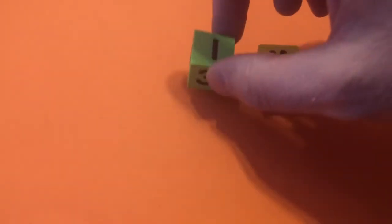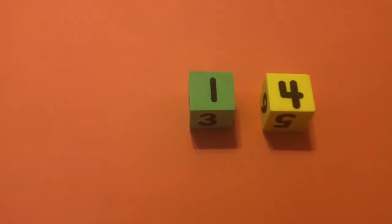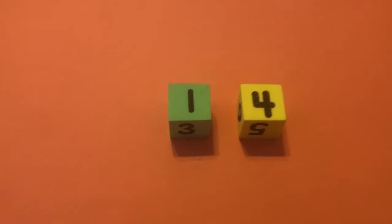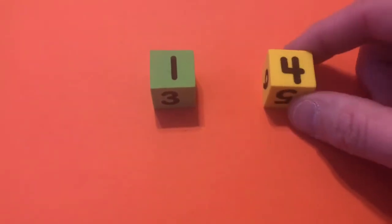So, in order to play our subtraction game, we start by rolling our two dice. Okay, so it looks like I have a one, and I have a four. Now, for this subtraction game, the first thing we have to do is we have to find the larger number. So, this time, four is the larger number. Four is larger than one.